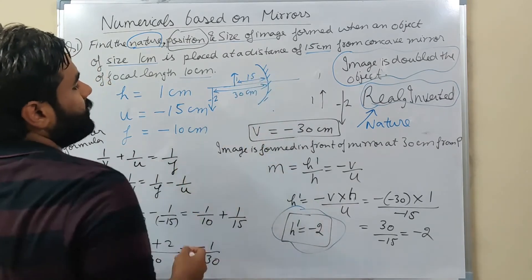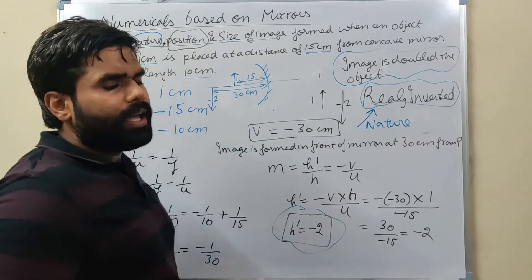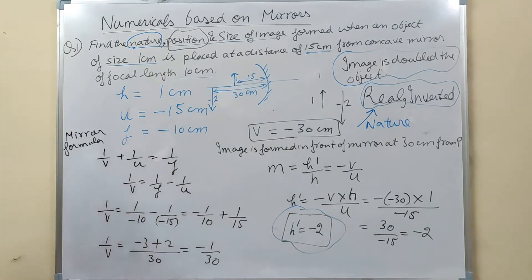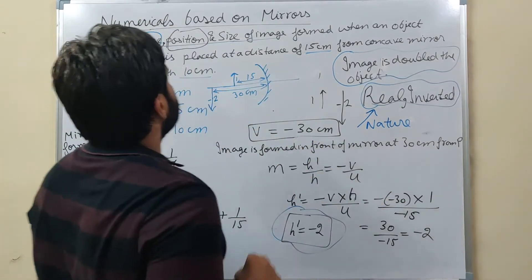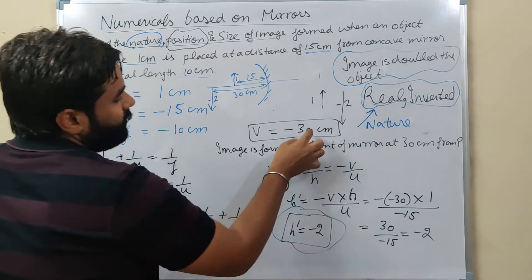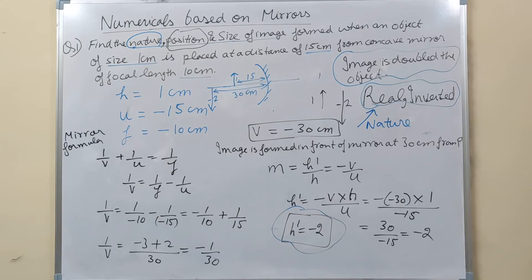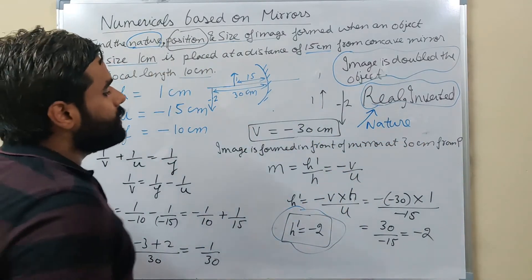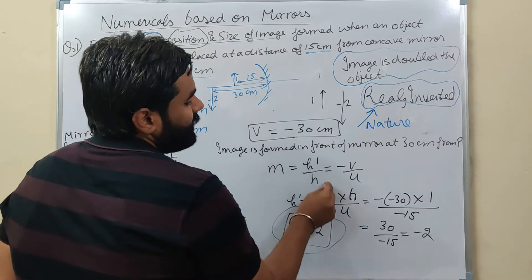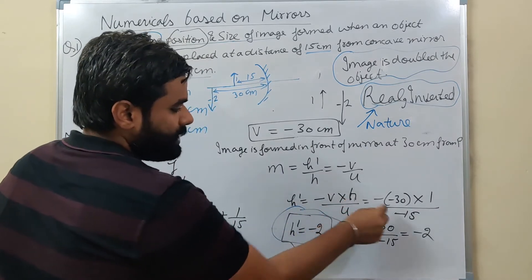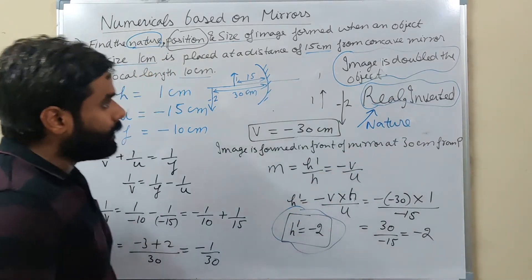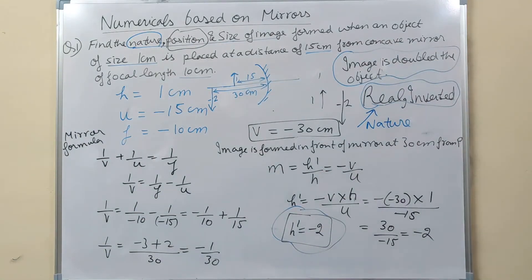In the ray diagram: this is the concave mirror, object was here at 15 cm, focal length 10 cm, image formed here at 30 cm below the principal axis. Object was 1 cm, image is 2 cm. So from this numerical: nature = real and inverted, position = 30 cm in front of mirror, size = 2 cm (enlarged). Quite easy!